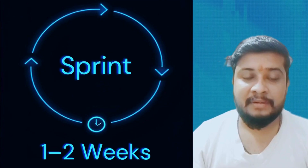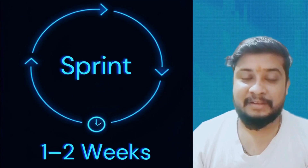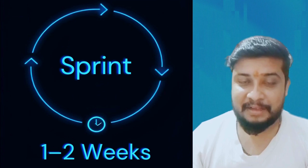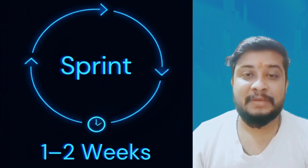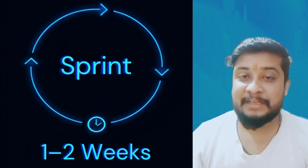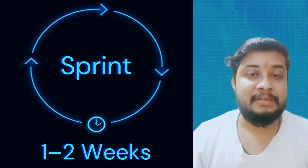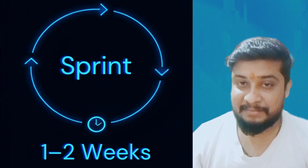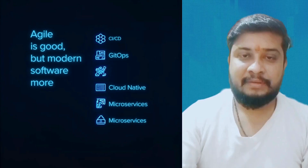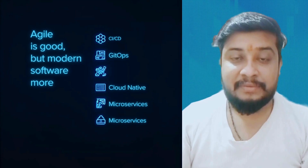Scrum makes Agile practical and organized. What exactly is a Sprint? In simple words, a Sprint is a one or two week time-boxed cycle — this is where the real work happens. Imagine you are building an application: in the next sprint you will create the login and sign-up. Every sprint delivers something working, and then the new sprint builds more. This makes development fast and incremental.